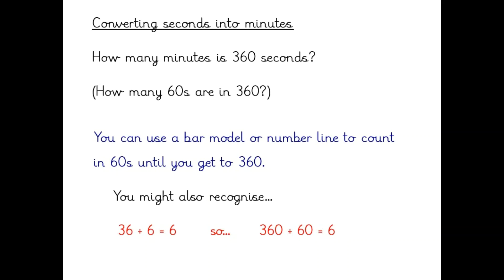You can use a bar model or a number line to count in 60s until you get to 360. Or you can use your six times table knowledge and you might recognise that 36 divided by 6 is 6. So 360 divided by 60 would also be 6. And this would be your answer, 6 minutes.